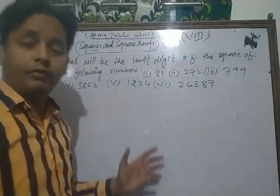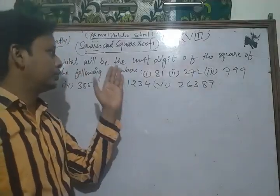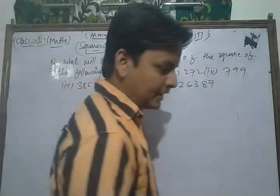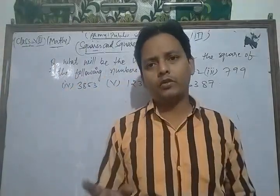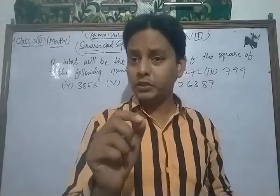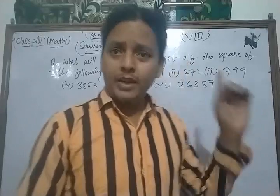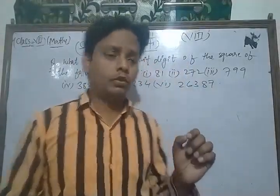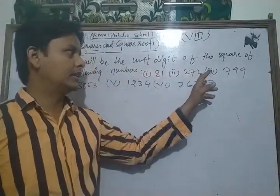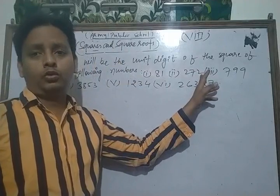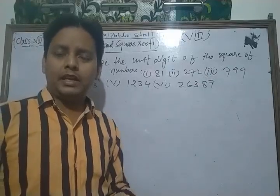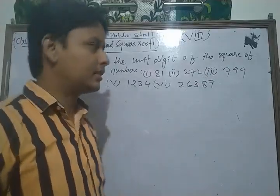Here your question is what will be the unit digit of the square of the following numbers. In finding the unit digits of the square of any number, you just find the square of its unit digit. After squaring the unit digit of the given number, the unit place digit is the required solution of the given question.